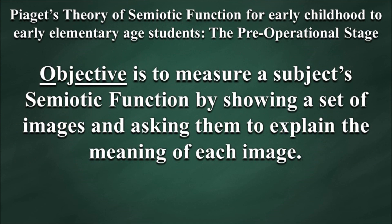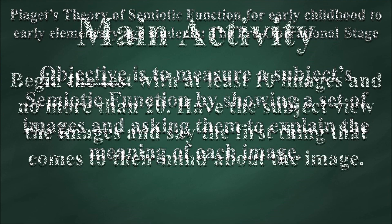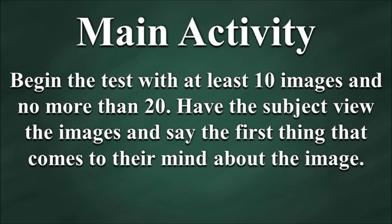The objective here is to measure a subject's semiotic function by showing a set of images and asking them to explain the meaning of each image. Begin the test with at least 10 images and no more than 20. Have the subject view the images and say the first thing that comes to their mind about the image.